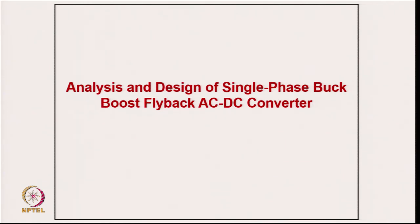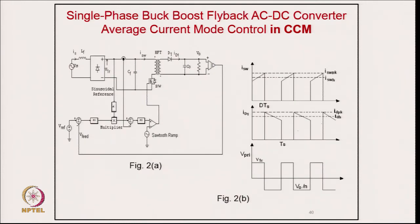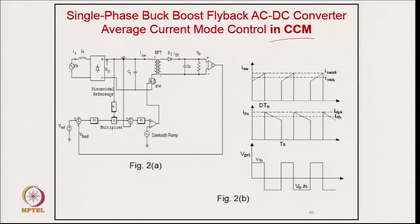Coming to the analysis and design of the single-phase buck-boost flyback converter, the DCM design includes a flyback with filter capacitor and output voltage regulation. The typical waveforms show switch current, diode current, and voltage across the primary winding. In DCM there are three modes: device conducting, diode conducting, and none conducting. In CCM there are only two modes: device conducting and diode conducting.